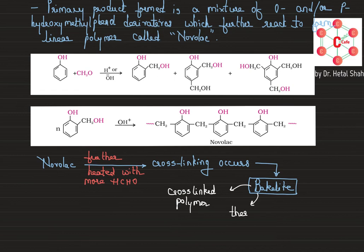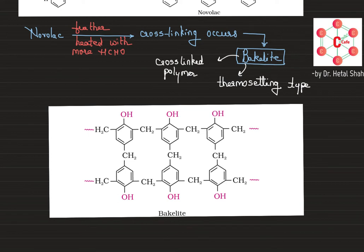Bakelite is of the thermosetting type — once a shape is given to bakelite, you cannot change its shape. Looking at the structure, the two linear Novolac chains are cross-linked by connections through CH₂ groups. Novolac is placed in moulds and the cross-linking is done inside the moulds, so the bakelite formed directly attains the shape of the mould.